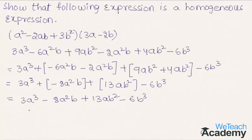Now let us find the degree of this expression. The degree of the first term is 3, the degree of the second term is 3, the degree of the third term is 3, and the degree of the last term is also 3. Since the degree of every term is 3, we call this expression a homogeneous expression.